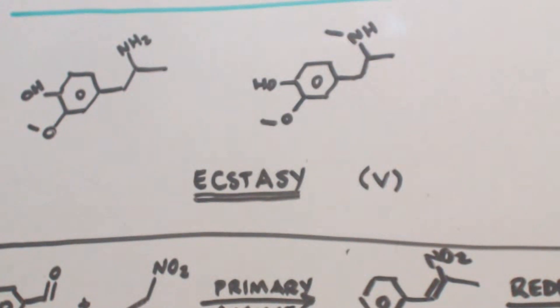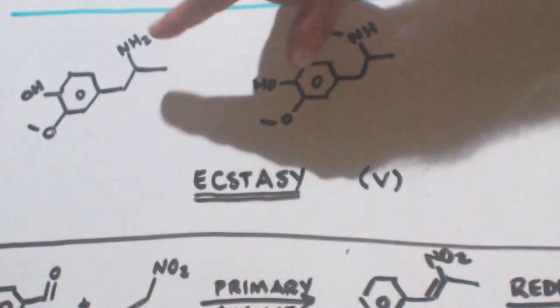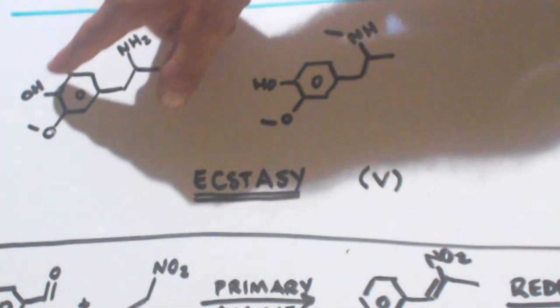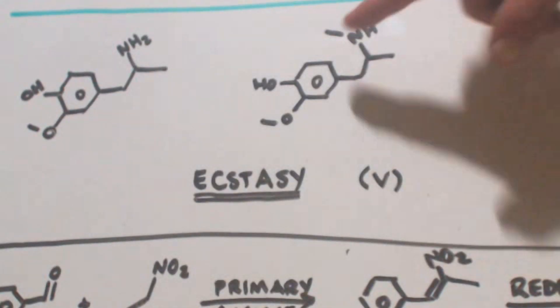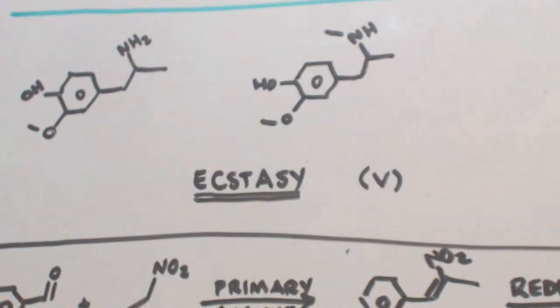This is actually called an active metabolite of MDA and MDMA. And what that means is, when you take MDA, your body metabolizes at least some of it into this. Well, not all of it, some of it into this. It breaks the bond here and makes the hydroxy group. Same over here. It breaks the methylene dioxide and makes a hydroxy group. So, when you take MDA or MDMA, you're actually taking this also because some of it, a fraction of it will be broken down into this. Now, these are actually a stronger form of MDA and MDMA. I don't know why people would make MDA or MDMA when they can make this. It doesn't really make sense, but whatever.